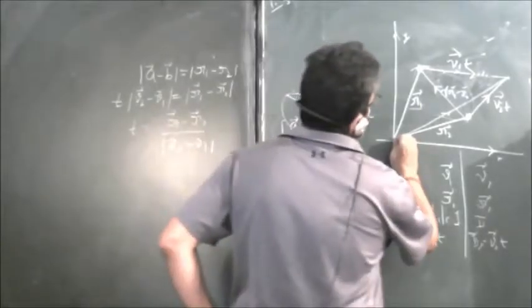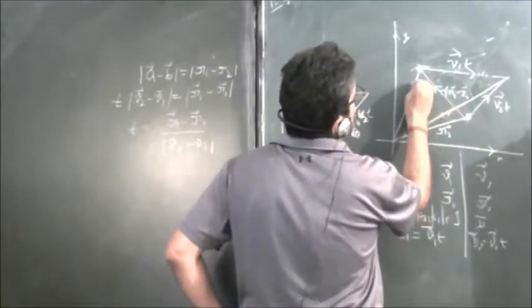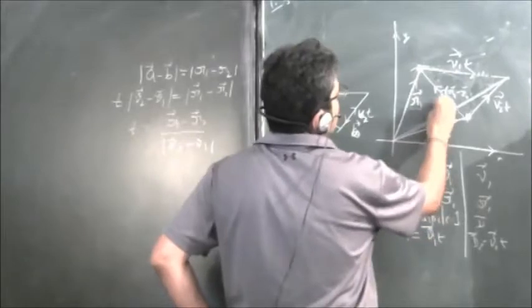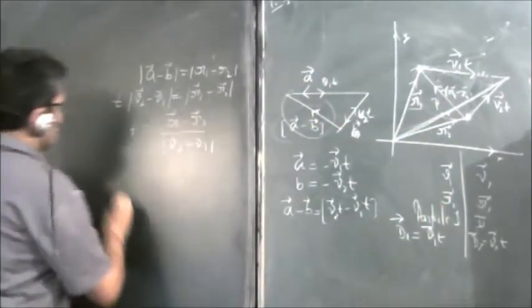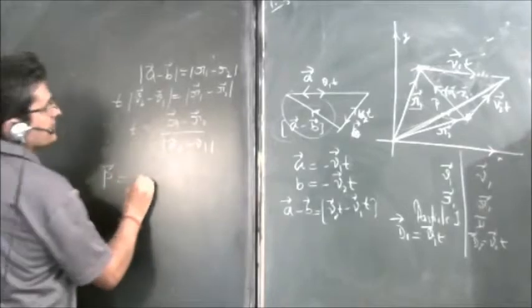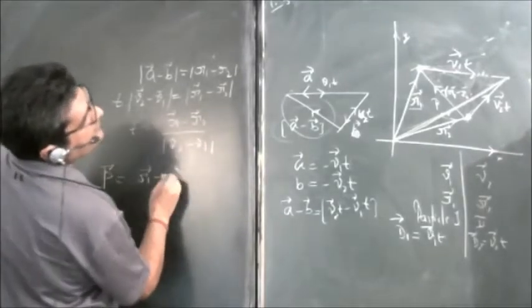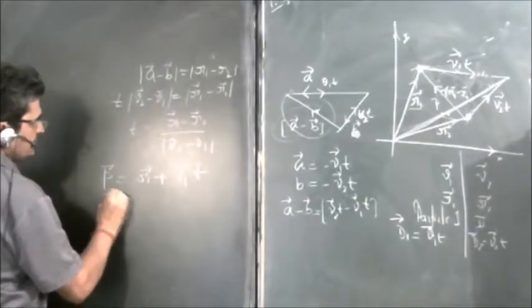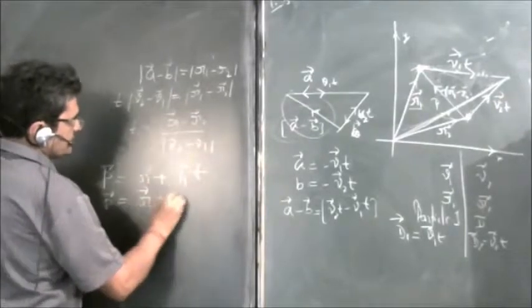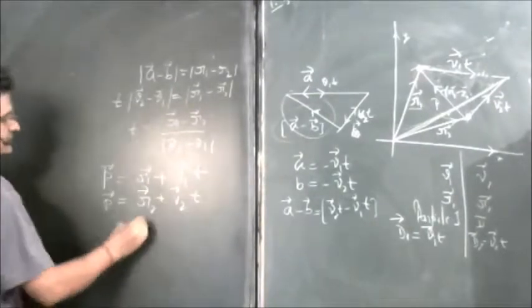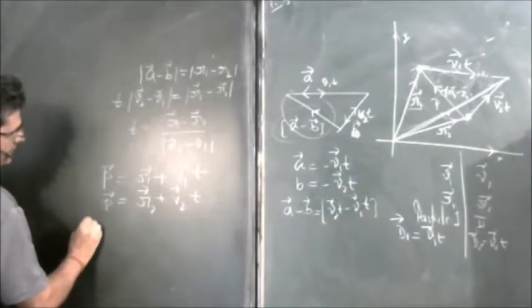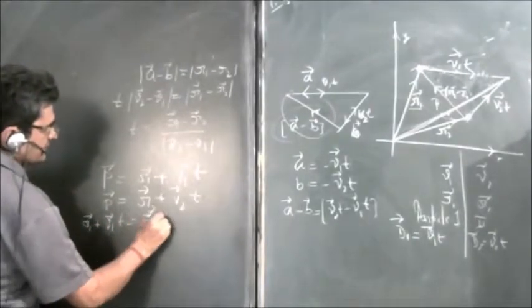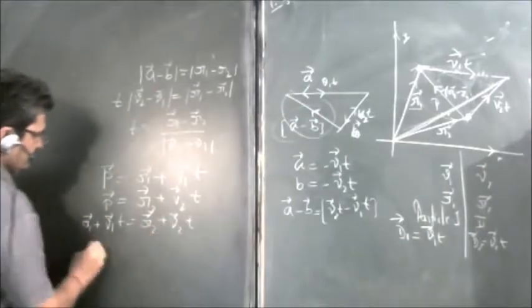Now we can write this vector as the sum of these two vectors. Let the collision point be vector p, so vector p equals r1 vector plus v1 vector times t, and the same p equals r2 vector plus v2 vector times t. Setting these equal: r1 vector plus v1 vector times t equals r2 vector plus v2 vector times t.